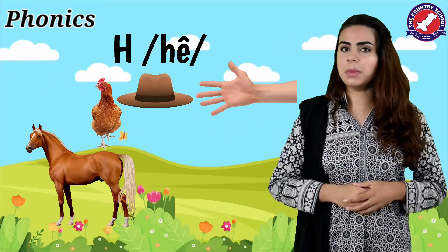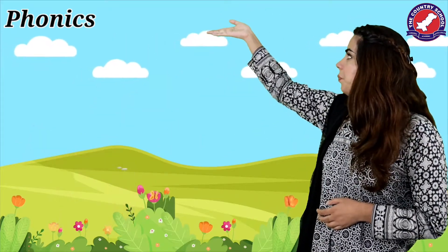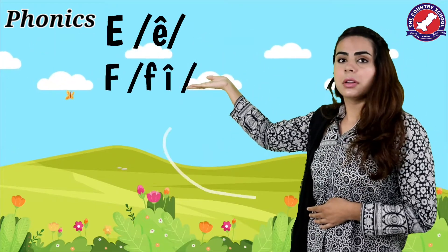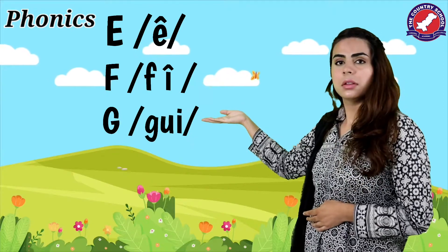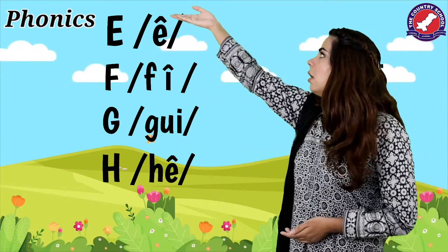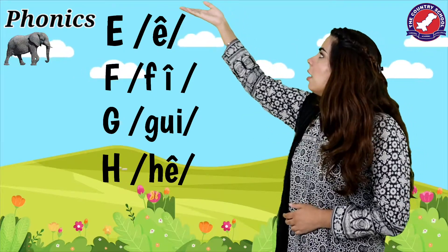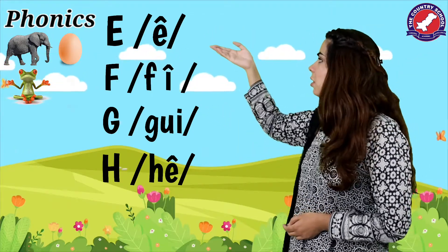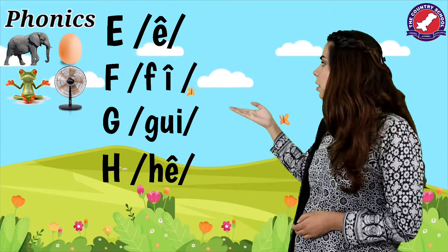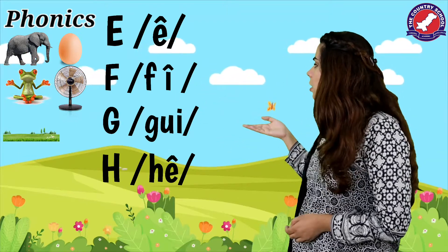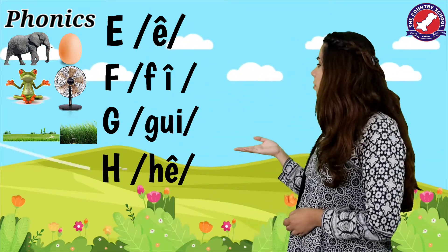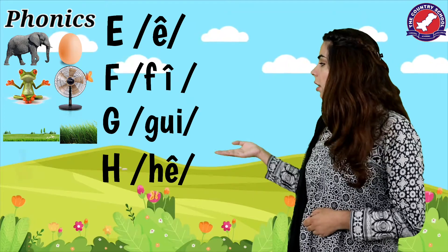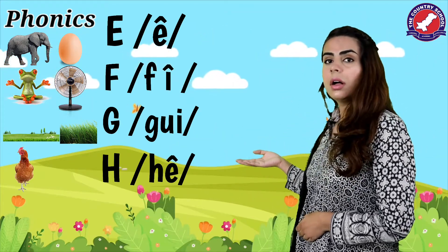Let's recap quickly and see which words we have. E, F, G, H. E, elephant. E, egg. F, frog. F, fan. G, garden. And now the last one — H, hen. Or H, hand.